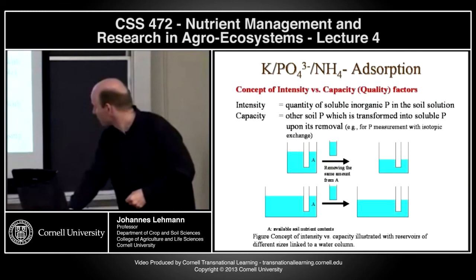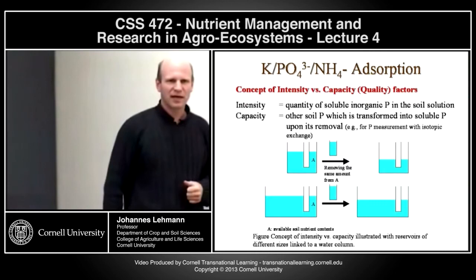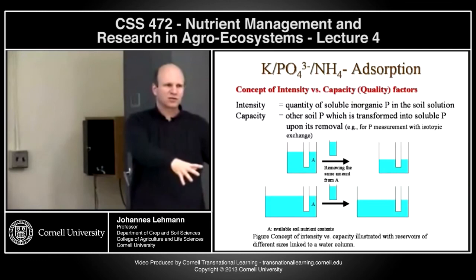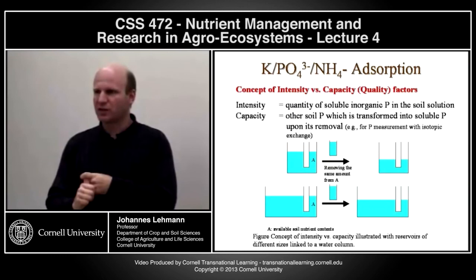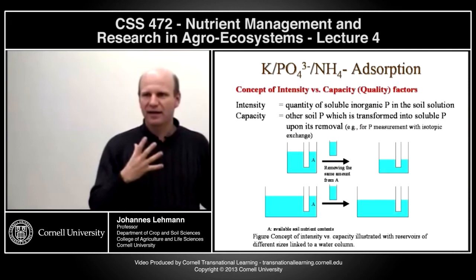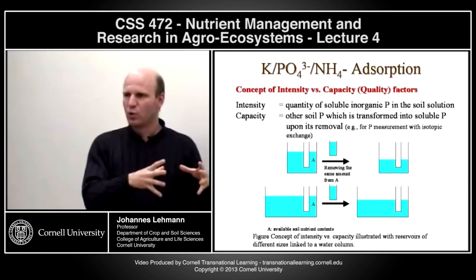Here are some model concepts — and I think David mentioned it already — the capacity and intensity concept, which helps us understand how available nutrient pools interact with so-called fixed or occluded pools. Let's take a step back. If we look at all these occluded and fixed pools of phosphate — or ammonium trapped in clay minerals — the plants can't get them and they're not immediately leachable. Are they completely gone, or are they somewhere interacting? That is exactly the question: to understand how these very unavailable pools might interact with available pools.